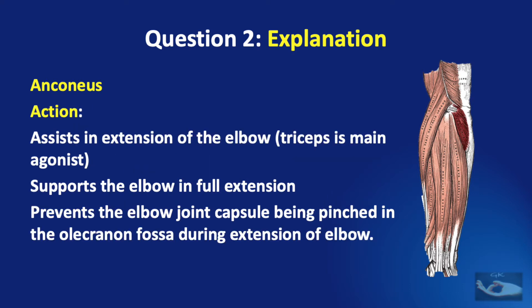This small muscle has three main actions. It assists in extension of the elbow, where the triceps is the main agonist. It supports the elbow in full extension. And thirdly, it prevents the elbow joint capsule from being pinched in the olecranon fossa during extension of the elbow.